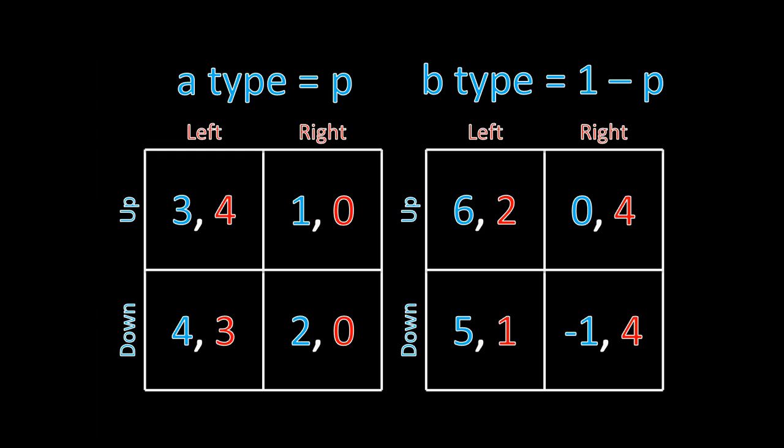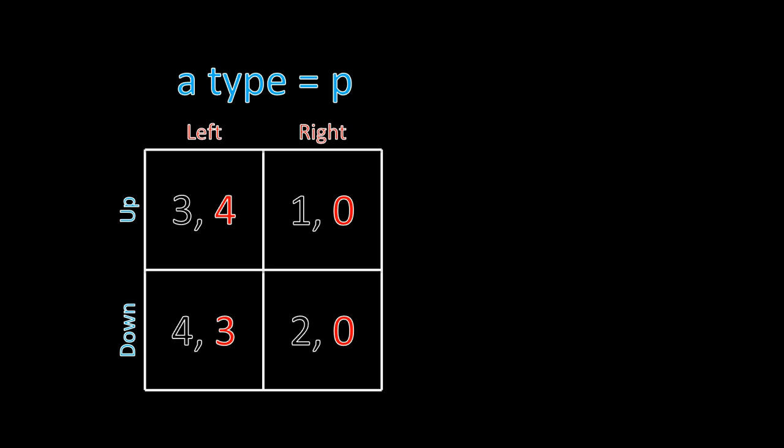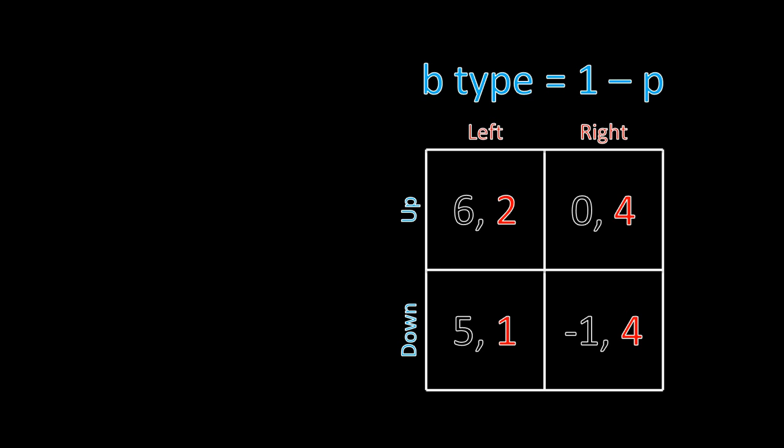There's something tricky about dominance in games with incomplete information. If we knew player one was the A type, player two would notice that left strictly dominates right — four is greater than zero, and three is greater than zero — so player two would never want to play right. But we can't eliminate right as a dominated strategy, because player two doesn't actually know whether she's in this A type world. She might be in the B type world, where the opposite is true: right strictly dominates left, since four is greater than two and four is greater than one. But again, we can't eliminate left either, because player two doesn't know for certain which world she's in.